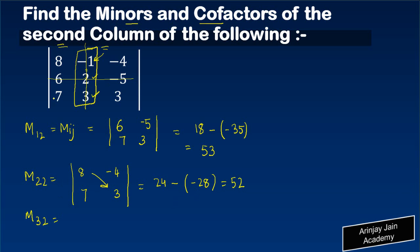For M_32, basically again this row and this column would get cancelled out. We will have these two elements and these two elements: 8, 6, minus 4, and minus 5.